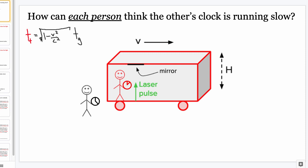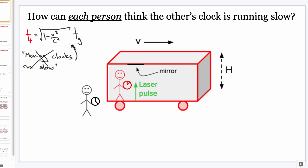Sometimes people say — and I'm just as guilty — 'moving clocks run slow.' This is a terrible way to say it. Moving clocks run slow is terrible because in relativity, the whole idea is that you can't tell who's moving and who isn't moving. So 'the moving clocks run slow' — we have no idea who that is. This is meaningless. This is poetry hinting at this formula. How do we know whose clock is moving? We can't. Relativity says we can't tell who's really moving.